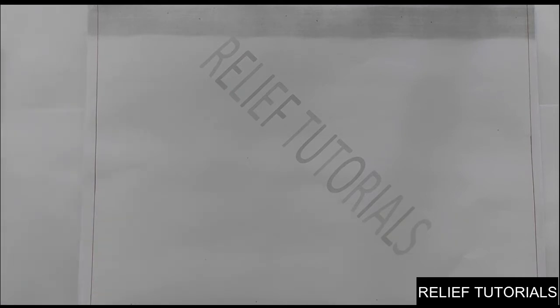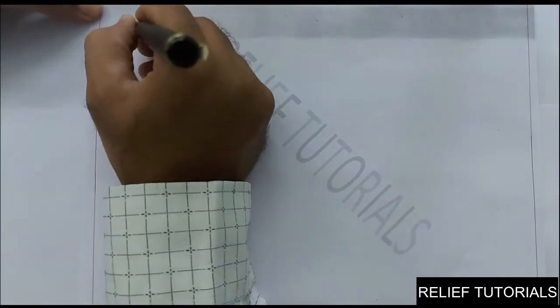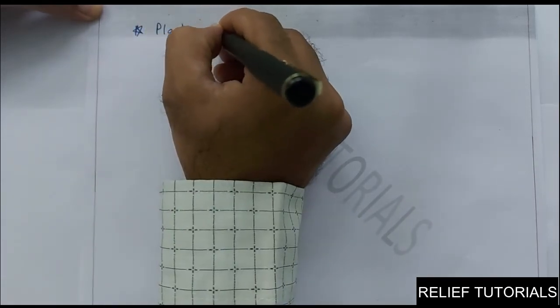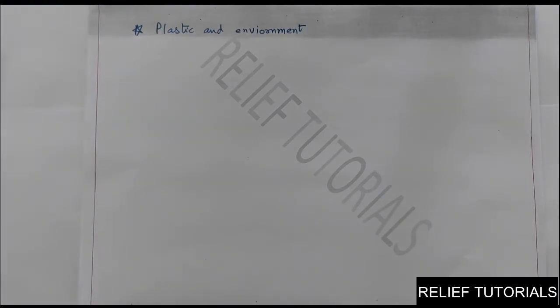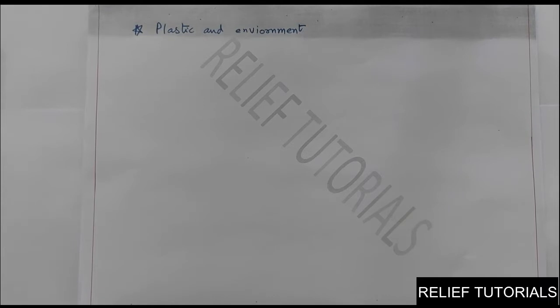Now the topic is about plastic and the environment. Nowadays, wherever you go in your surroundings — if you go to a shop to buy something, the shopkeeper will give you things in a plastic bag or polythene bag. There are plastic school bags, plastic bottles we use to fill water, soft drinks available in plastic bottles, and disposable dishes and cups we use in daily life. We are using a lot of plastic, and at the end of its use it becomes garbage for us.